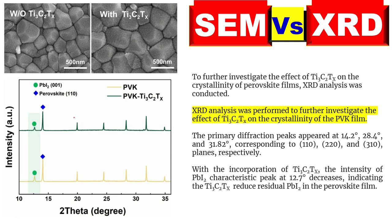In XRD analysis, peaks contain the most important information. For example, if new peaks are appearing, this means there is a change in the crystal structure of the material. If some peaks are disappearing, or there is an increase or decrease in peak intensity — peaks contain the most important information about the XRD graph. Let's see how to describe this kind of information in a research paper and how to relate XRD analysis with SEM graphs.